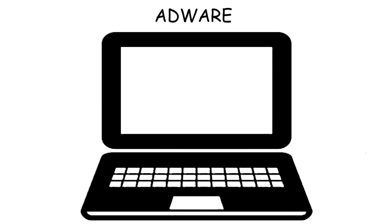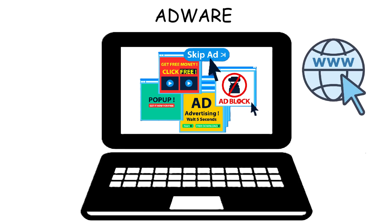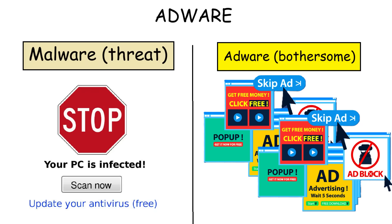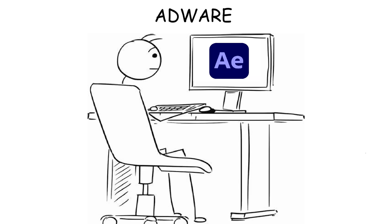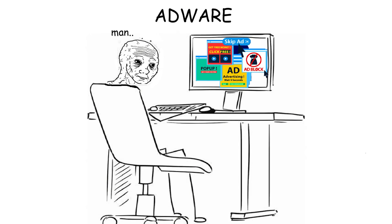Adware is a type of malware that forces users to view unwanted pop-ups or ad banners while browsing the web or using software. While not as harmful as malvertising, it can be extremely intrusive and slow down system performance. For example, a user who downloaded a free video editing app from a shady website may find that it also installs adware, bombarding them with annoying pop-up ads while they try to work.